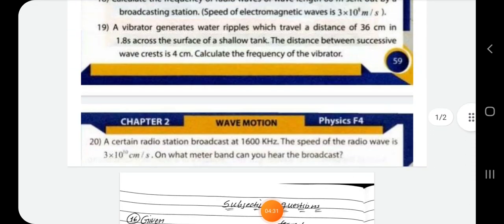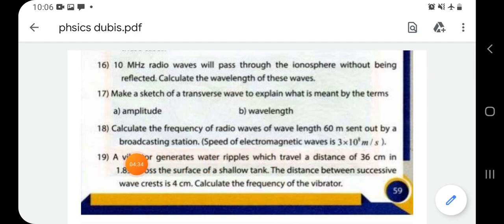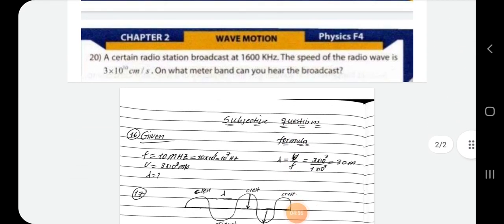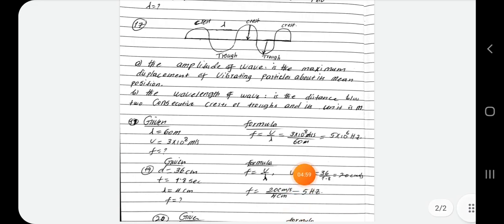So I asked the question about the vibrous generators. We travel a distance of 36 cm in 1.8 seconds across the surface of shallow tank. The distance between successive wave crests in 4 cm. Calculate the frequency of the vibrous. Also we have a frequency. That means that time is 1.8 seconds. The time is 4 cm.